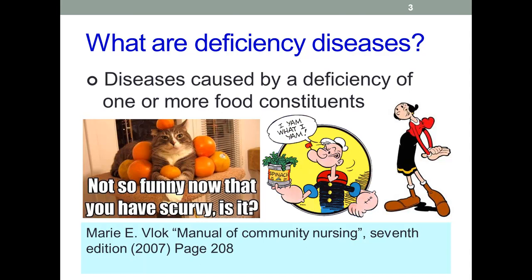Cats, including lol cats, can produce endogenous vitamin C, so really don't need supplements. Popeye's consumption of spinach would have protected that particular scurvy dog from vitamin C deficiency. I'm not sure if this is true of his girlfriend Olive Oil, who may have had a range of nutritional issues that probably needed addressing.